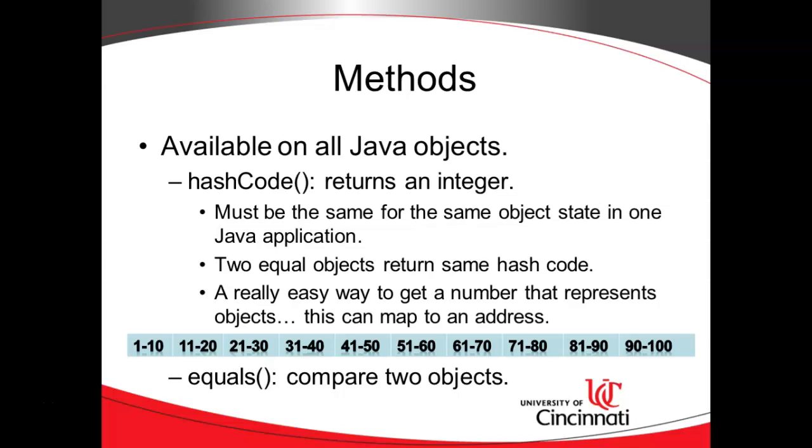Some methods that we want to know. First of all, these methods are available on all Java objects because they are defined in the great grandfather, grandmother class, java.lang.object. One of them is called hash code. Hash code will return an integer that is relatively unique, but not guaranteed to be unique.